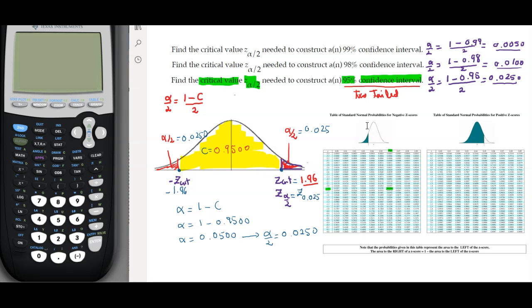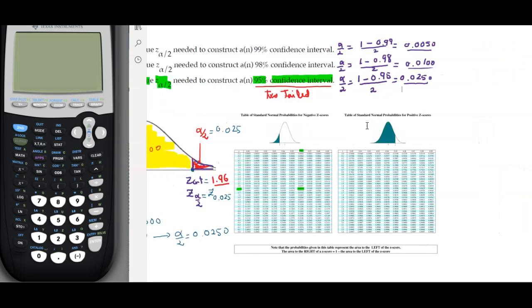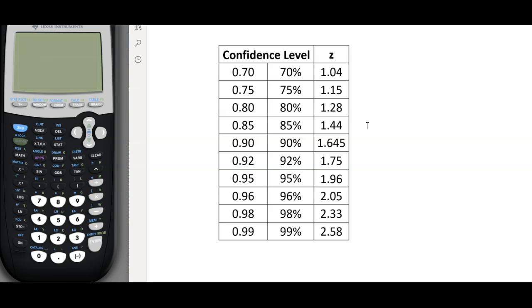Now once you understand this process, I think it's more productive if you search on the internet for the keyword confidence interval z values. Here you can get all the values that you need. For instance, the one that we just did for 0.95, we get 1.96. So that's the z of alpha over 2, which is z of 0.025.